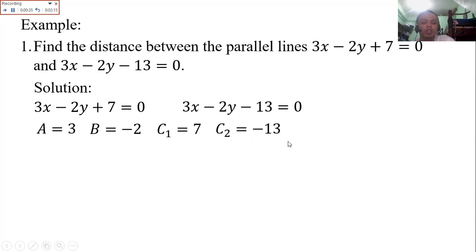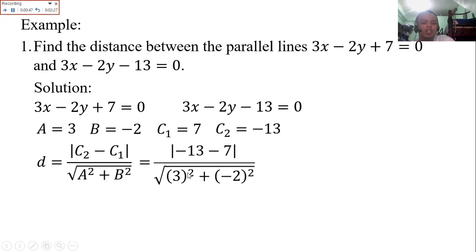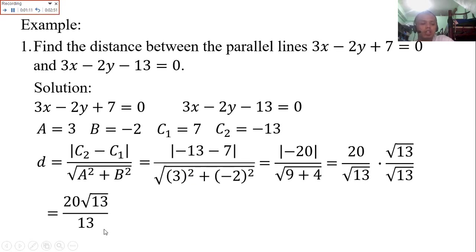Your A here is 3 because they're the same. Your B here is negative 2. Your C sub 1 is from the first equation, which is 7. Your C sub 2 is from the second equation, which is negative 13. Now substitute into the formula. Your C sub 2 is negative 13 minus your C sub 1 is 7, all over your A is 3 squared plus your B is negative 2 squared. Negative 13 minus 7 is negative 20, over 9 plus 4. The absolute value of negative 20 is 20 over 9 plus 4 is 13. The square root of 13, 13 is not a perfect square, so we need to rationalize. This becomes 20 times square root of 13 over 13. Then simplify. This becomes 5.6 units as the approximate value.